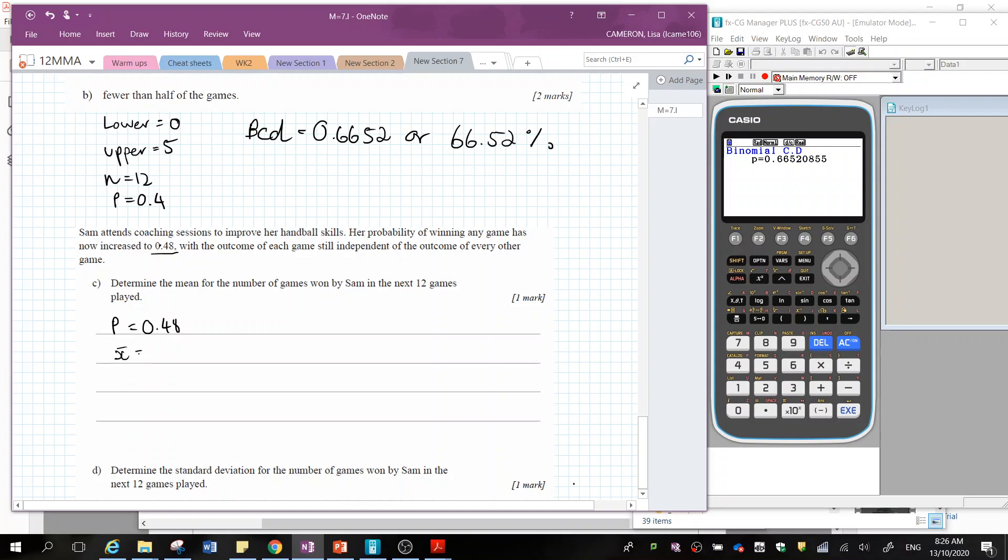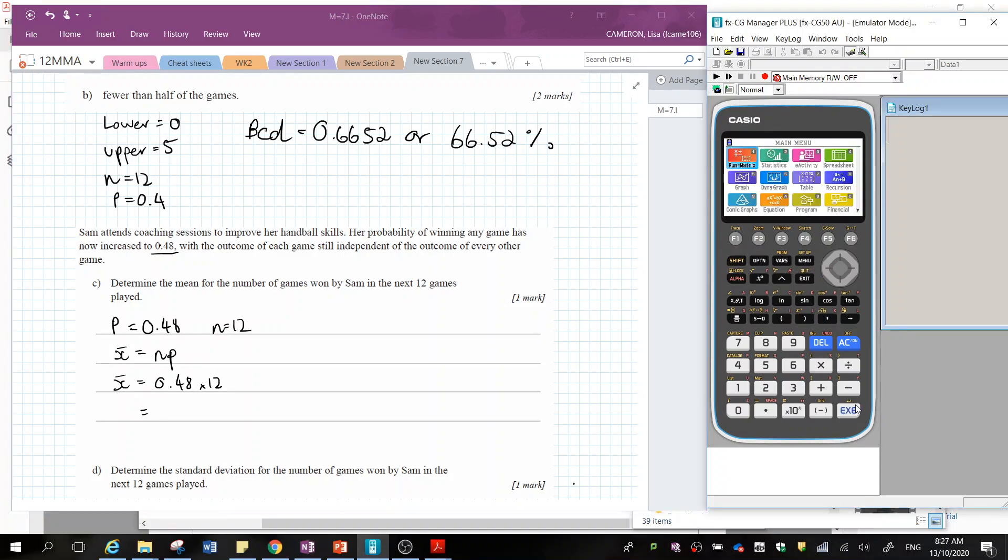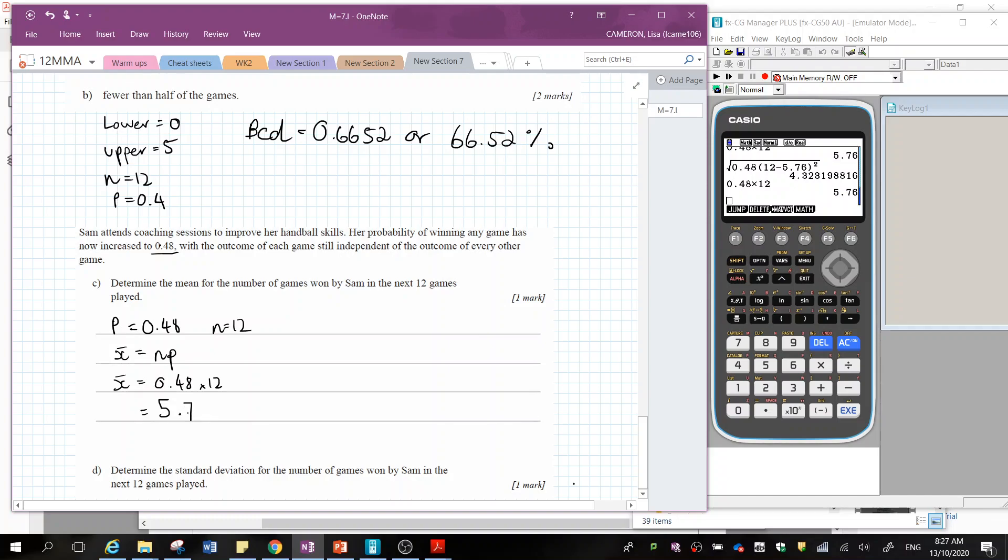So the mean is given by the number of trials times the probability. Here, our number of trials is still 12. So the mean is going to be 0.48 multiplied by 12, which is going to give me a score back in the run matrix. So now I've got 0.48 times 12. So the mean is going to be 5.76 in the next 12 games. So just a little under half.